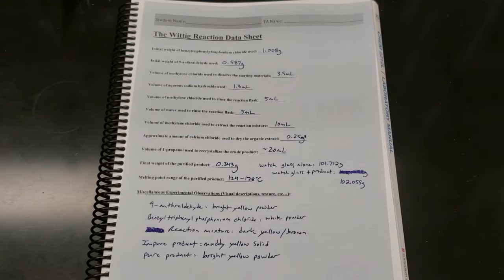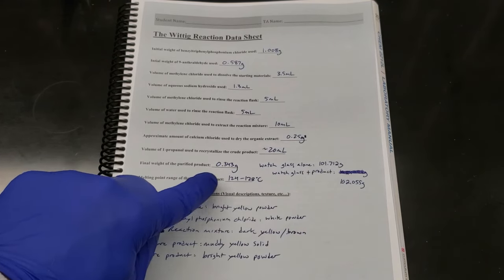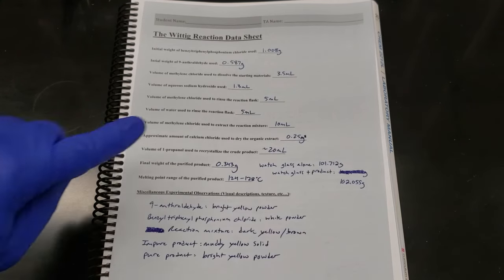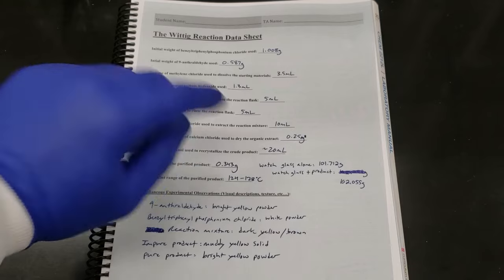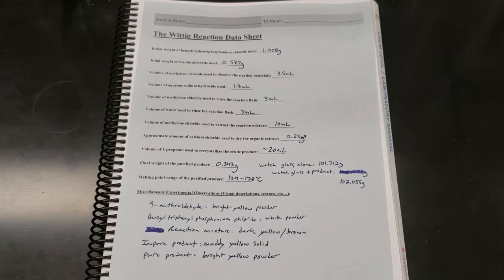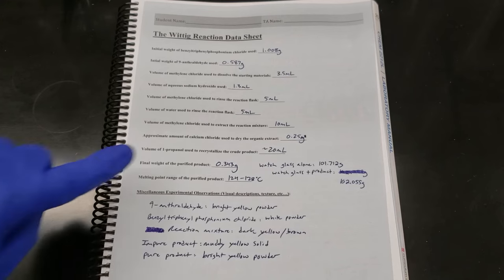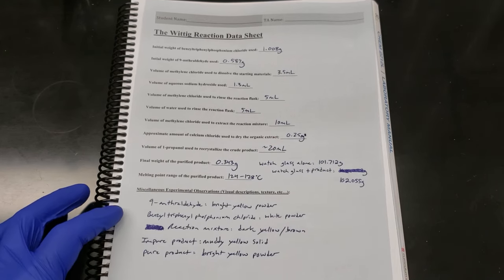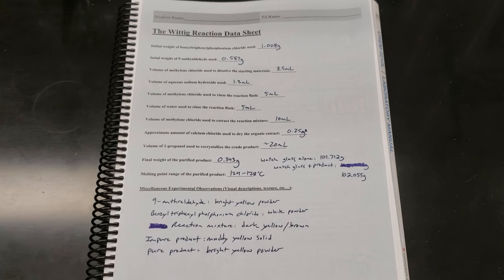Here's our final data sheet for this reaction. We completed our melting point test and we got a value of 124, a range of 124 to 128 degrees Celsius. We went back and weighed our watch glass. Once we cleaned it off, it came out to 101.712 grams. That gives us a difference of 0.343 grams for our purified product, so 343 milligrams. All of my observations are recorded down at the bottom, so this is the data that you'll use to write up your report to calculate your limiting reagents, your theoretical yields, and your final yield. Good luck.